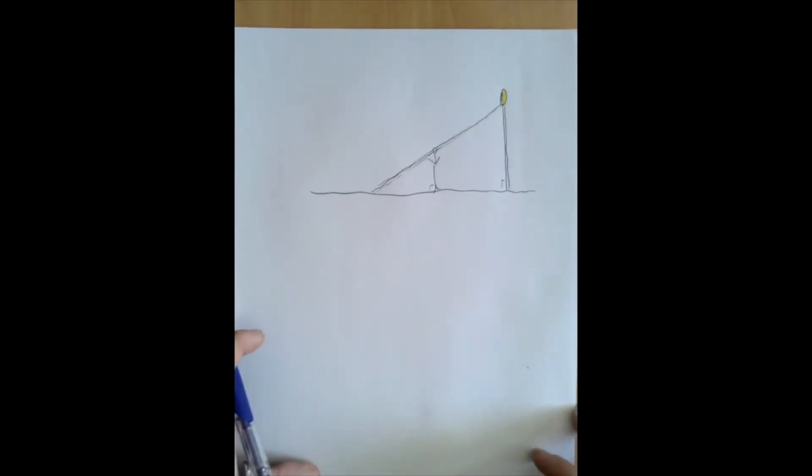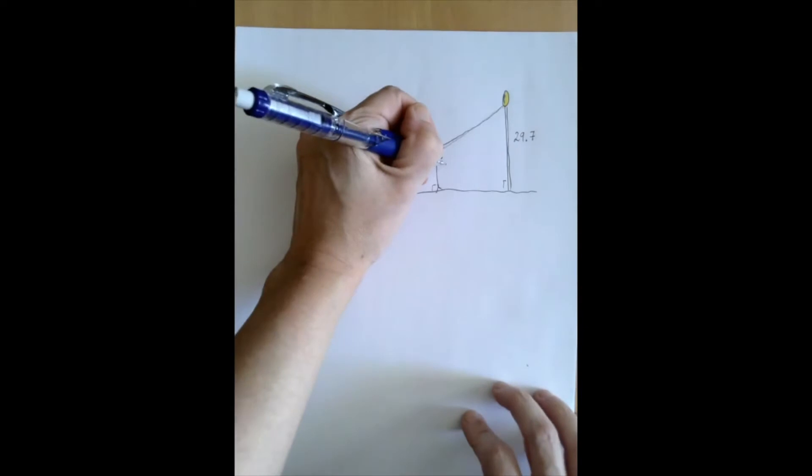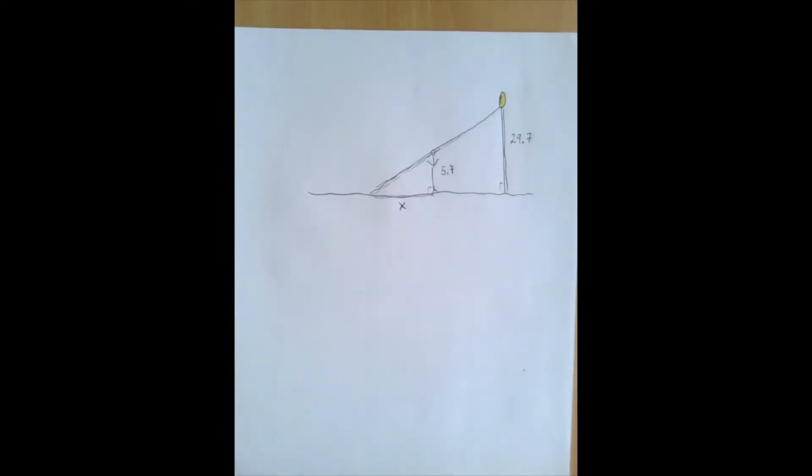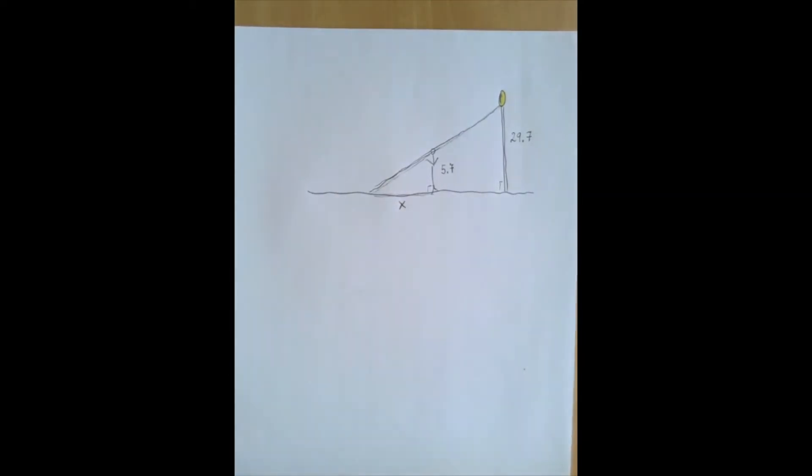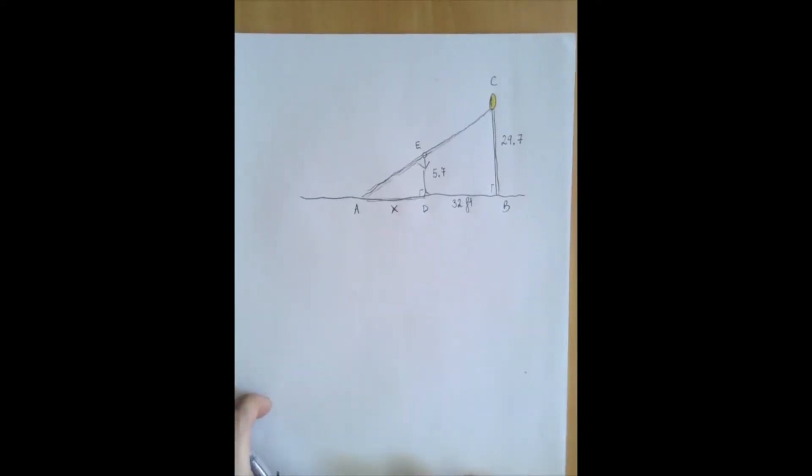All right, so what was given was that the height of the light is 29.7 feet, the person is 5.7 feet tall, and we want to know the length of the shadow, which we're going to call X, and there is one more data that's given, the distance between the person and the street light, and that distance is 32 feet. So what we have is two similar triangles.